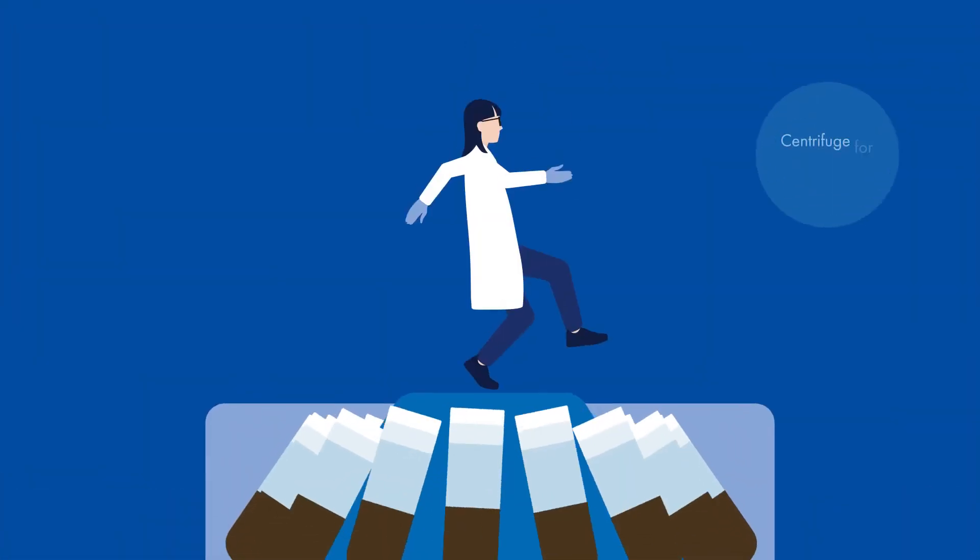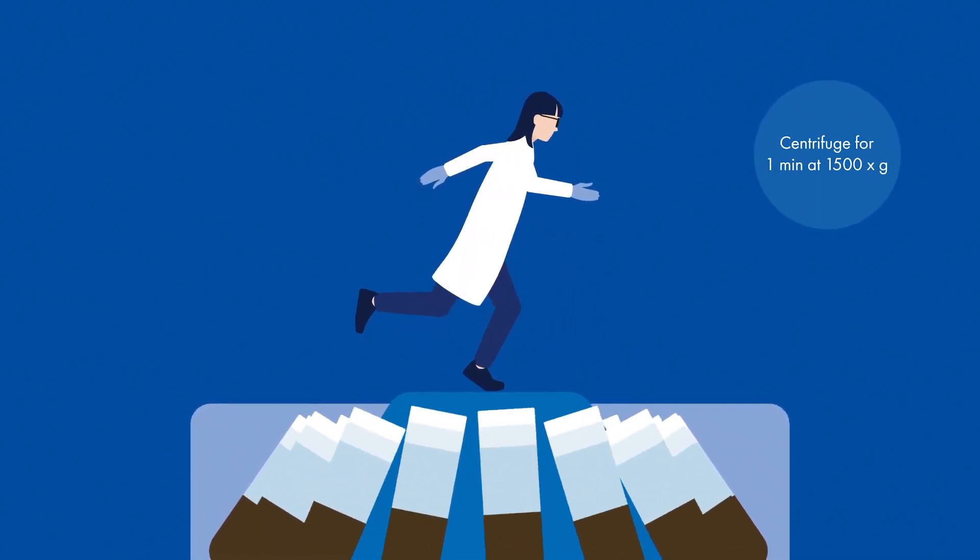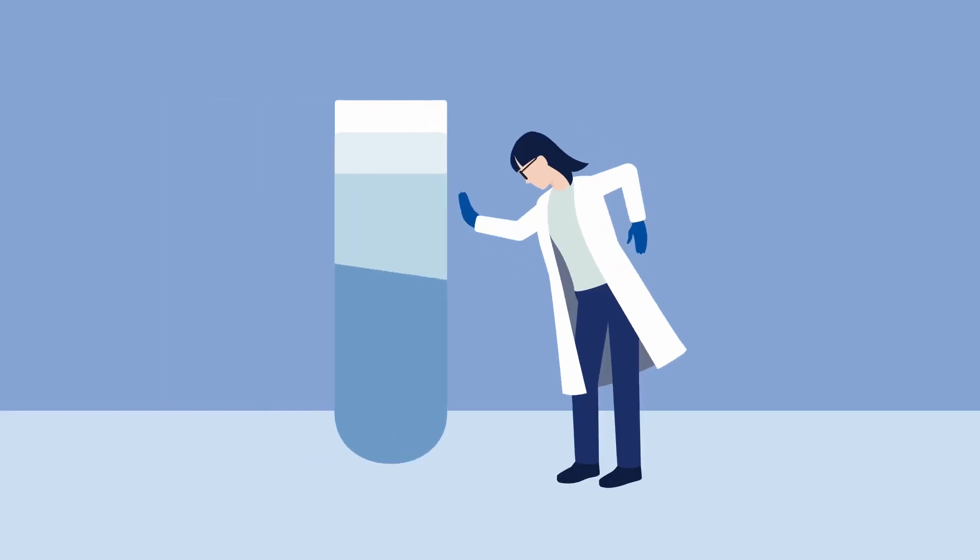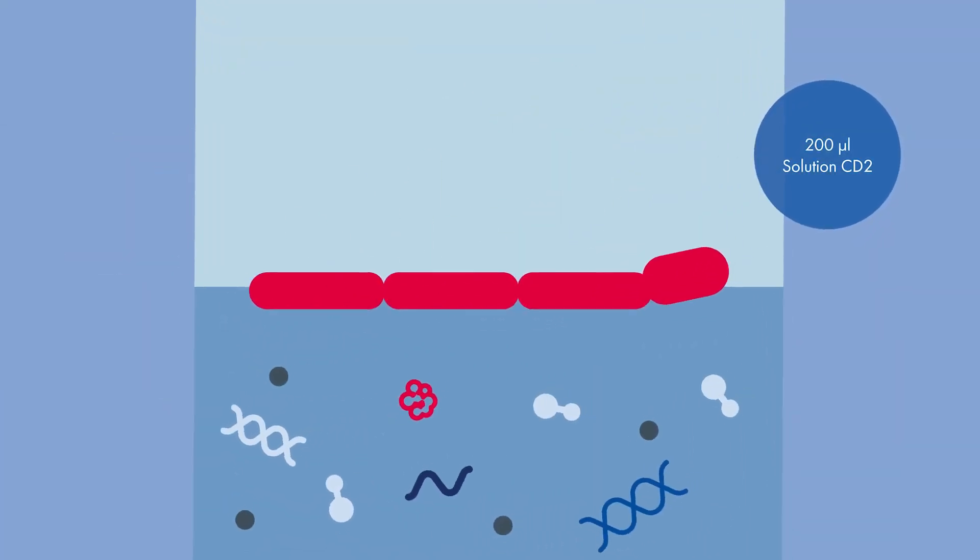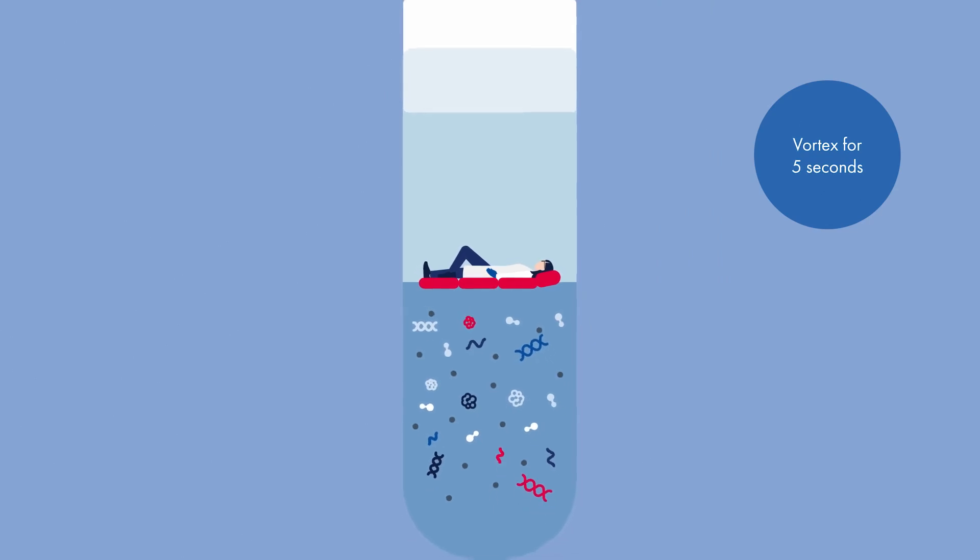After the disruption, centrifuge your tube to pellet the solids. Transfer the supernatant into ml microcentrifuge tubes. Your sample is now lysed and homogenized. Add solution CD2. It contains inhibitor removal technology that would precipitate the contaminants that interfere with your downstream application.